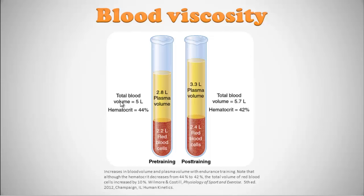That plasma increase helps maintain and actually reduces blood viscosity. The original hematocrit was 44%, but after training it actually went down to around 42%, even though red blood cell count increased — because the proportional rise in plasma volume reduced the percentage of formed elements versus total blood volume. This tells you that the more you train, the more plasma volume expands, and hematocrit should not go up significantly unless an athlete is blood doping.